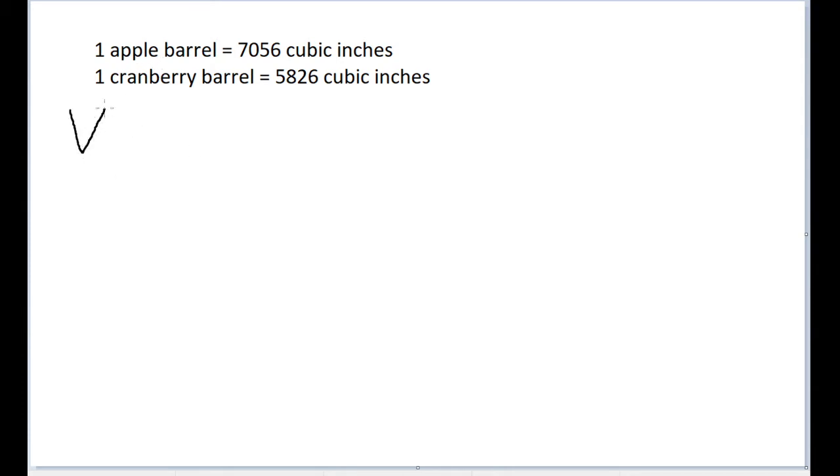So first, let's solve for the volume, I'll call it V sub A, the volume of 20 apple barrels. So that's going to be 20 times 7,056 cubic inches. And this is equal to about 141,120 cubic inches.